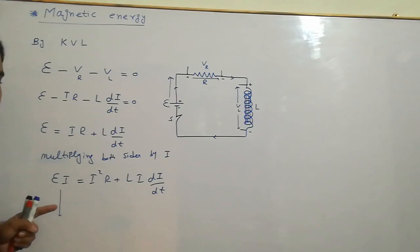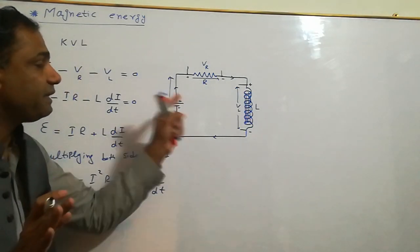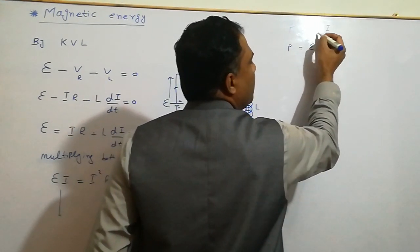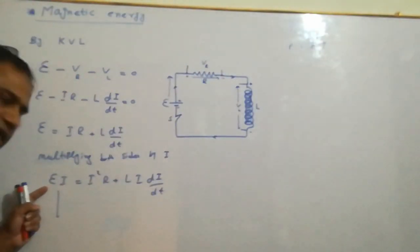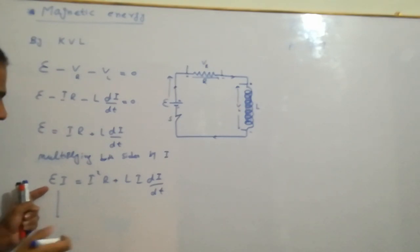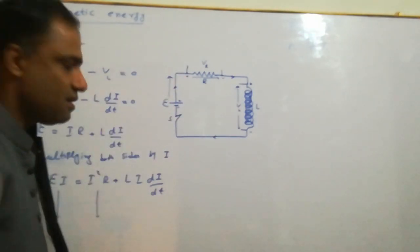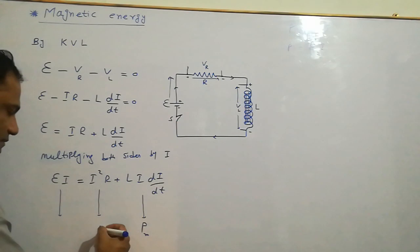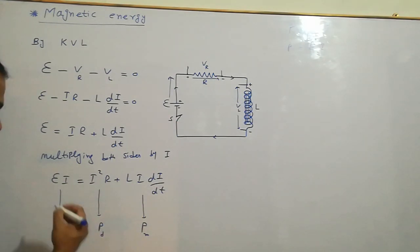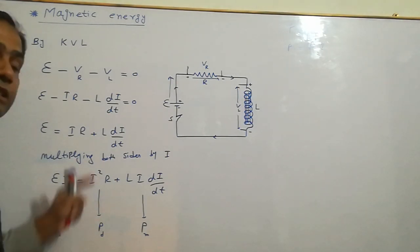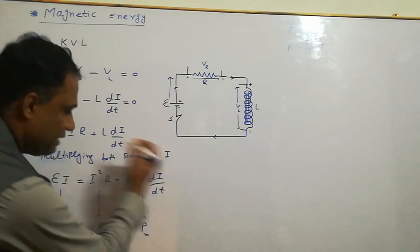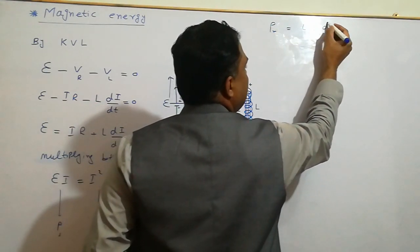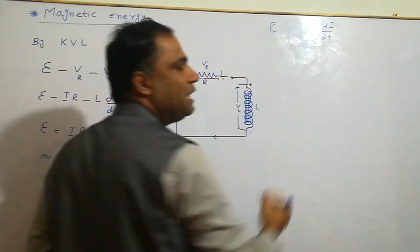This is the power supplied by the battery. P equals VI. This is the power supplied by the battery, this is the power dissipated across the resistor, and this is the power developed across the inductor — the magnetic power. We label them: Ps is power supplied, Pd is power dissipated, Pm is magnetic power.